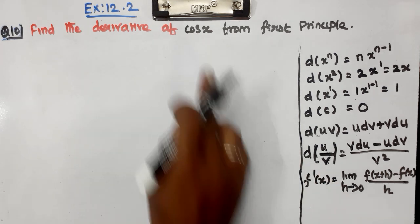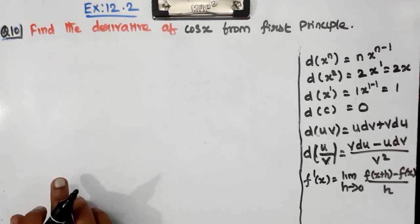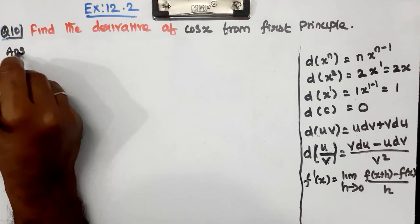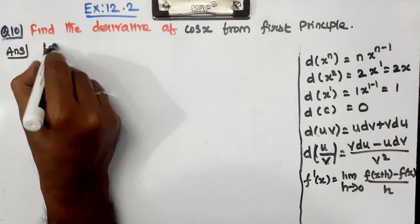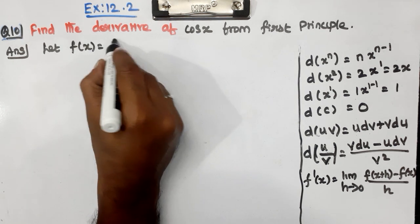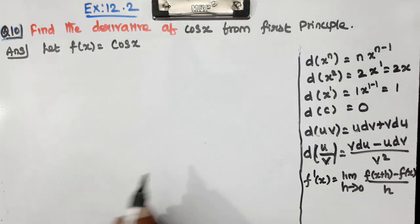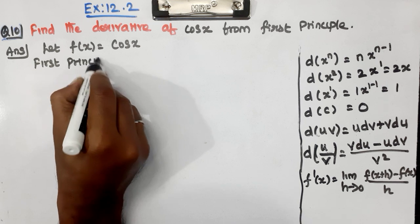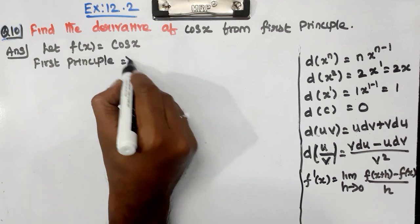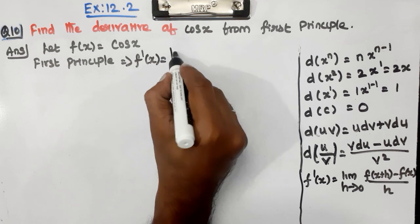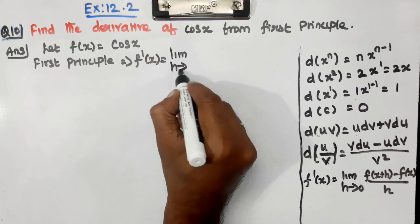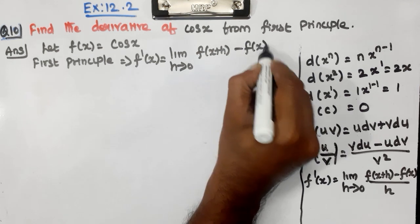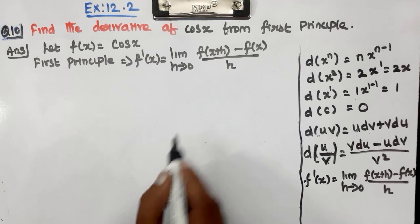So, looking at this question, let F(x) = cos x. Then we apply the first principle formula: F'(x) = limit h tends to 0, F(x + h) minus F(x), divided by h.